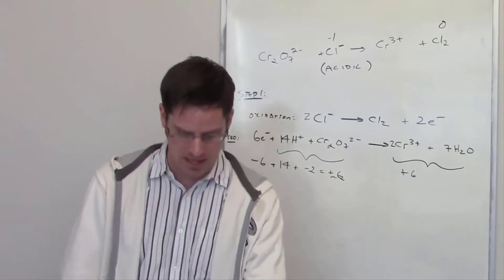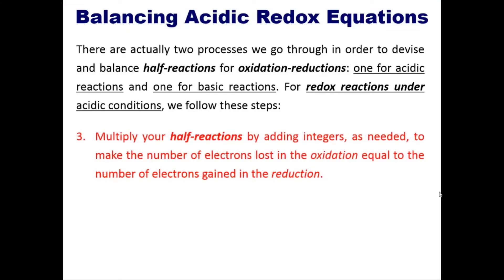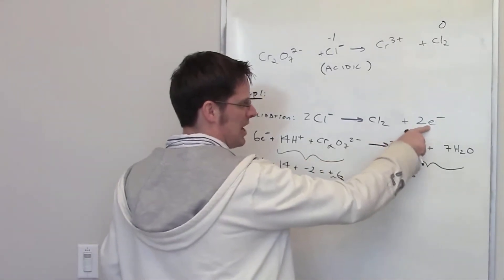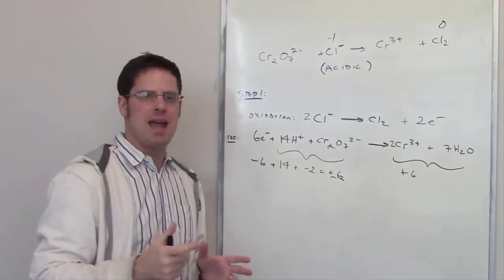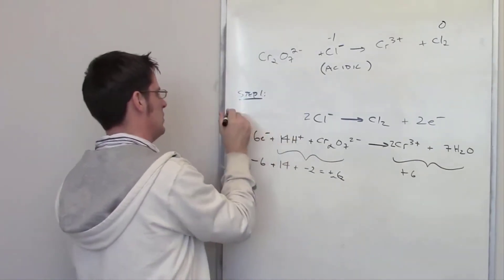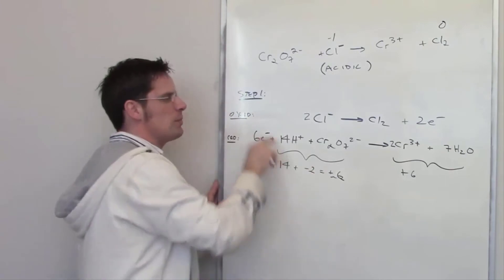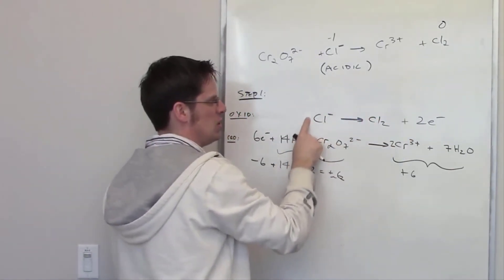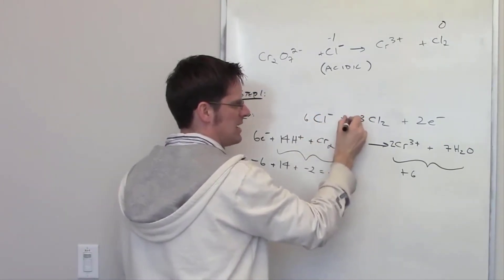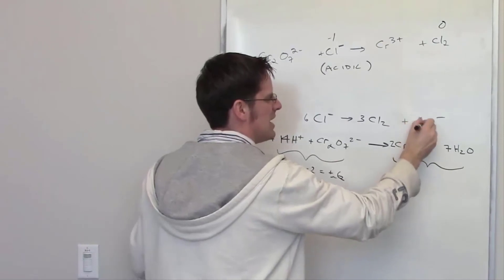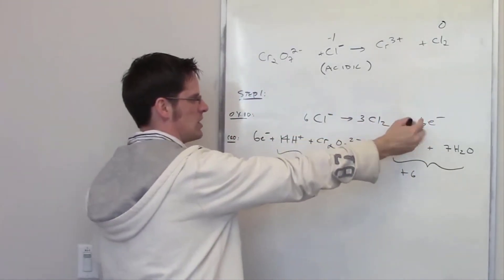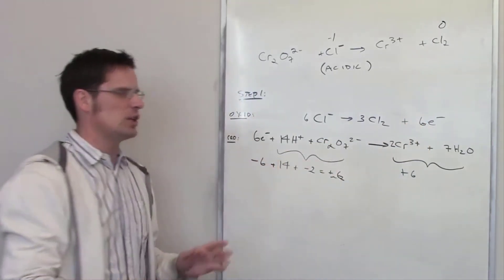The next step says to multiply the half reactions by integers as needed to make the electrons lost in oxidation equal the electrons gained in reduction. The oxidation half reaction has two electrons and the reduction has six electrons — these don't match. Multiplying the oxidation reaction by three makes the two electrons become six, and the coefficient in front of Cl⁻ becomes six and Cl₂ becomes three. Now both half reactions involve six electrons.